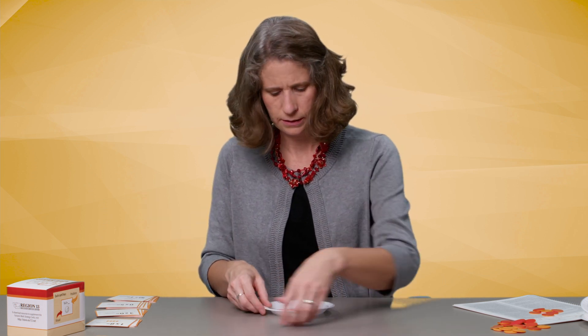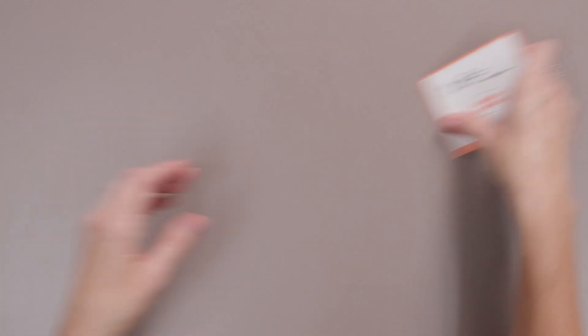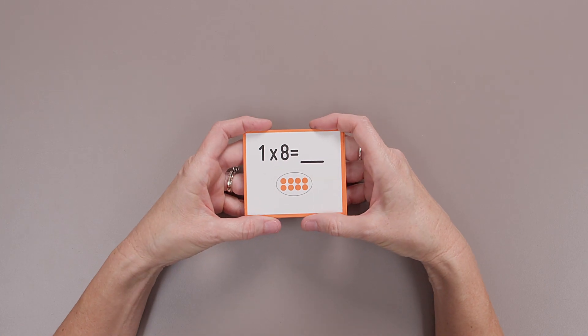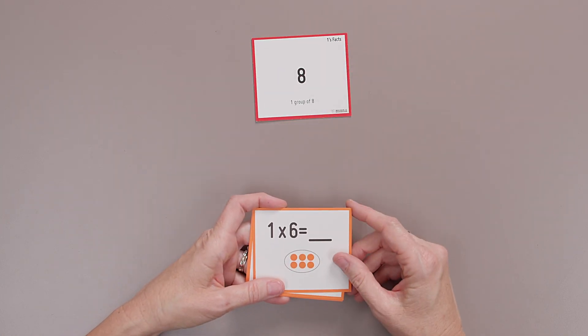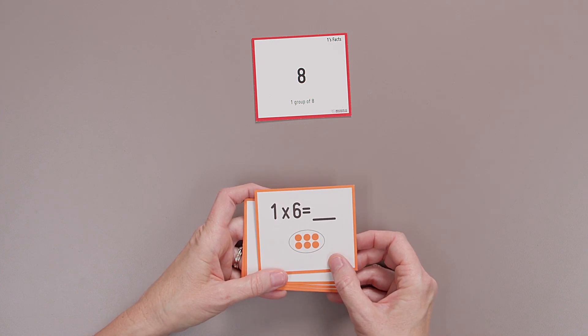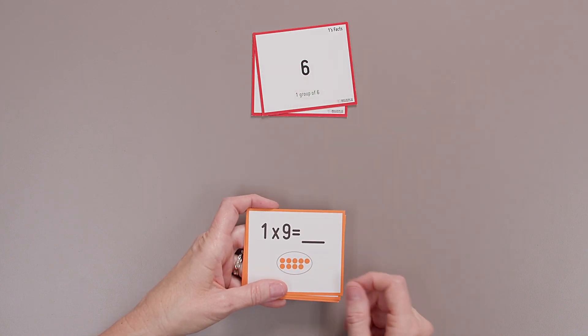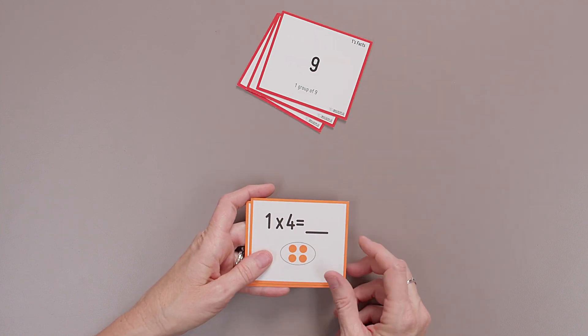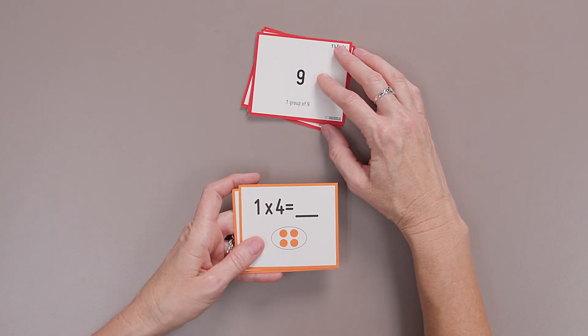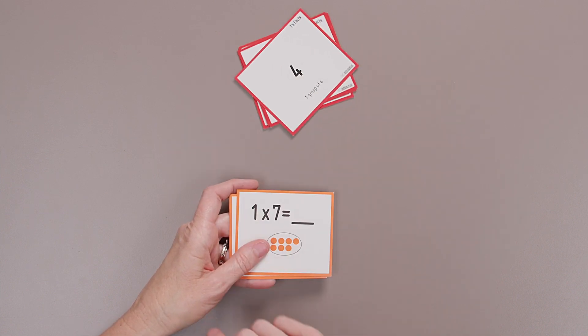Okay, so let's do a little practice. See how we do. Multiply by one. One times eight. Eight. One times six. Six. One group of six. One times nine. Nine. One times four. Four.